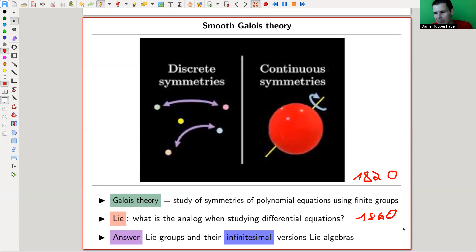Lie gave some answer, and the groups that come out are nowadays known as Lie groups. They have infinitesimal versions which are called Lie algebras. The Lie groups are like Galois theory - you're looking at differential equations instead of discrete polynomial equations. Continuous symmetries instead of discrete symmetries. That's the difference between the finite groups you see in Galois theory and the smooth groups you see in Lie theory.